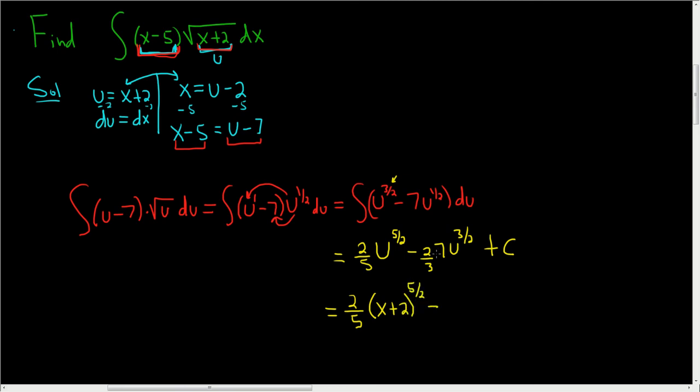Minus 2 times 7 is 14 over 3. And then u was x plus 2. So x plus 2 to the 3 halves. Plus our arbitrary constant, which we called c.